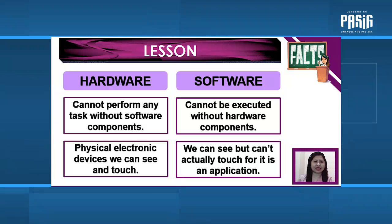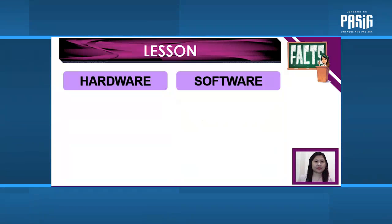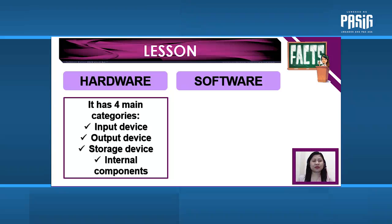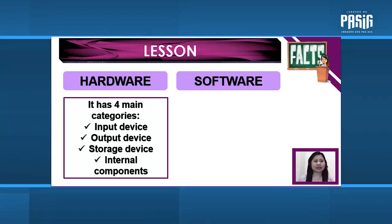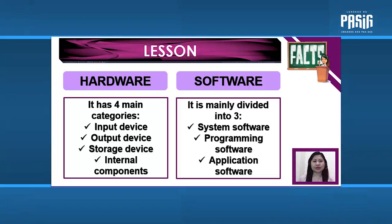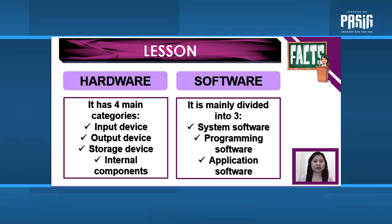For the last differentiation: hardware components are categorized into four — input device, output device, storage device, and internal components — while software components are divided into three: system software, programming software, and application software.